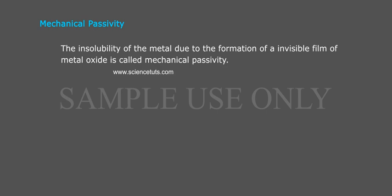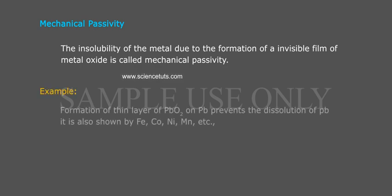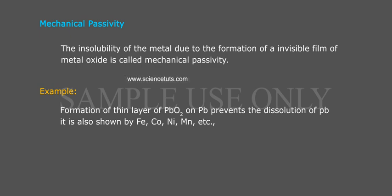Mechanical passivity is defined as the insolubility of a metal due to the formation of an invisible film of metal oxide. For example, the formation of a thin layer of PbO2 on Pb prevents dissolution of Pb. This is also shown by Fe, Co, Ni, Mn, etc.